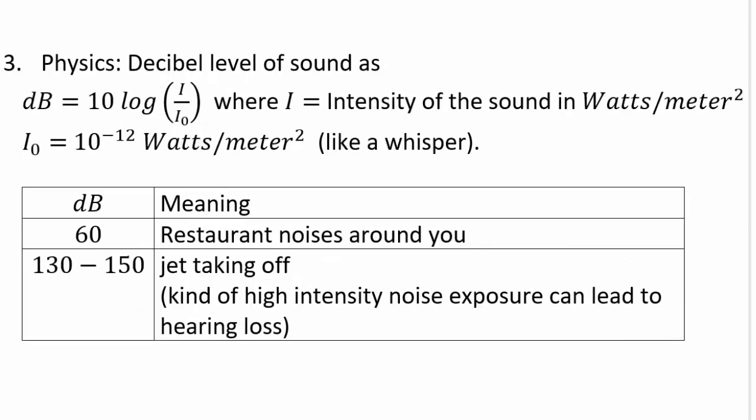Sound level — how loud a sound is — is measured as 10 times log(I / I₀), where I is the intensity of sound in watts per meter squared, and I₀ is the baseline sound that humans can hear, like a whisper, at 10⁻¹² watts per meter squared. Decibel level 60 is similar to a crowded restaurant. A decibel level between 130 and 150 is like a jet taking off. Studies show that high-intensity sound exposure can lead to hearing loss, such as from loud concerts or working at an airport.